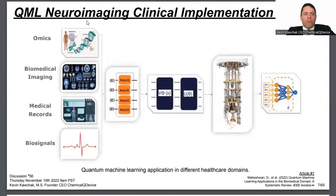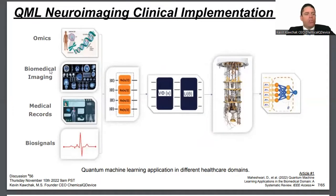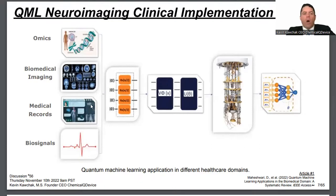There are different things you can do. I focus on biomedical imaging and quantum machine learning approaches to get better images for Alzheimer's prediction. There's also omics — genomics, medical records including EHRs and EMRs, biosignals — and I may touch on those as far as the company's future direction, which relates to quantum sensing.